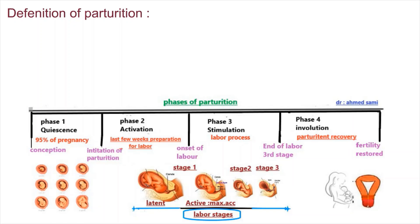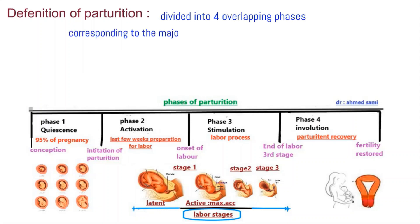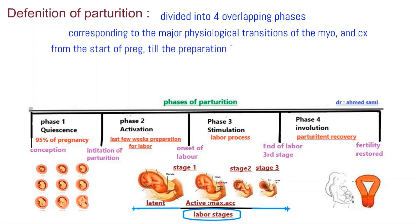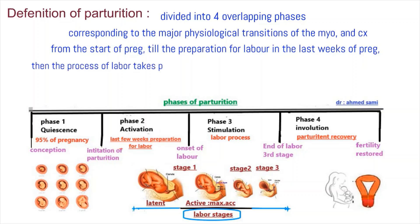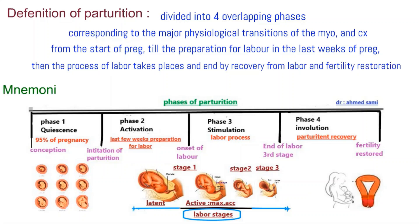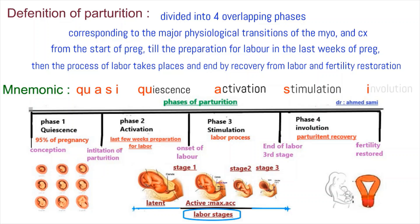Parturition is divided into four overlapping phases that correspond to the major physiological transitions of the myometrium and cervix: from the start of pregnancy till preparation for labor in the last weeks, then the process of labor, ending with recovery and fertility restoration. Mnemonic: 'The women complete parturition after passing four quasi hard phases' — quiescence, activation, stimulation, and involution phase.